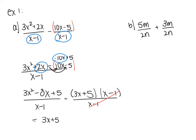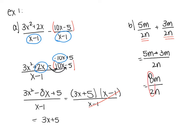In example 1 part B, I still have a common denominator of 2N, so I stick both fractions on top of that common denominator and look for like terms, giving me 8M over 2N. The only part you can cancel is once you've got everything on one fraction and simplified — so 8 and 2 simplify to give me 4M over N as the final answer.